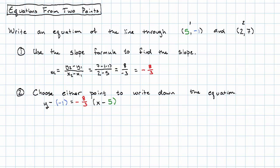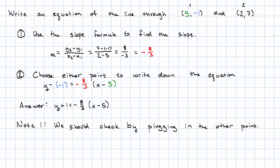And that's the equation of our line. Now, some things to note. Our first note is we should check by putting in the other point. That is, we should make sure that the point (2, 7) really is on that line we wrote down.